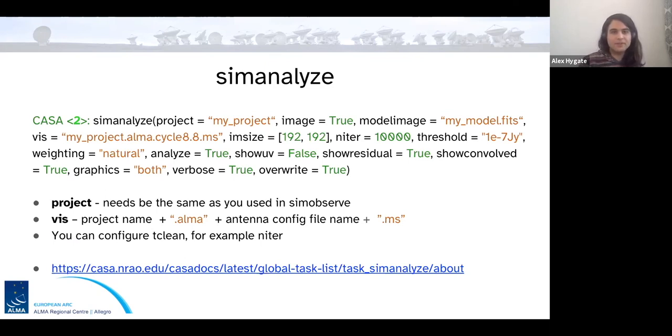And then when you come to wanting to analyze an image, your output from SimObserve, you use SimAnalyze. There are a couple of key things to note here, is that the project keyword must be the same one you used in SimObserve. And the visibility project name will be, the visibility name here, so the MS file that you're telling SimAnalyze to clean, will be the project name plus .alma when you're simulating Alma, plus the antenna configuration file name plus .ms. So in this example, myproject.alma.cycle8.8, so the 8th configuration file from cycle8.ms. And you can again customize lots of different parameters in SimAnalyze, for example, those related to Tclean, such as the number of iterations and threshold. And again, I've linked here all the different information for you to see these different things you can customize.